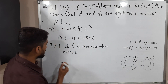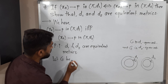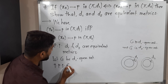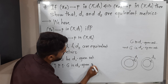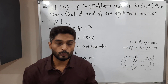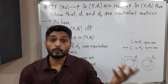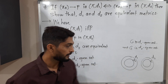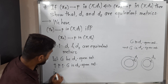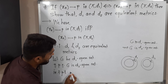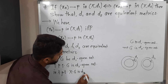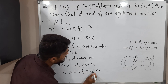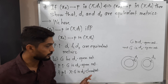Let us start with any d1-open set. Let G be a d1-open set. My target is to prove that G is also a d2-open set. How to prove any set is open? If the complement of a set is closed, then we say that set is open. So to prove G is d2-open, it is enough to prove its complement X minus G is a d2-closed set.